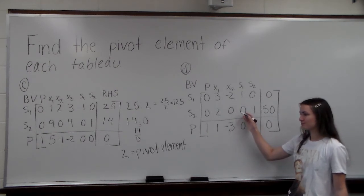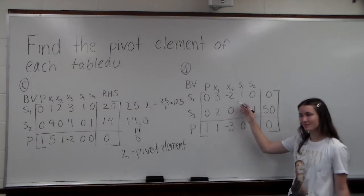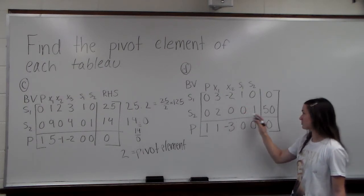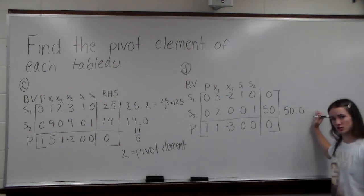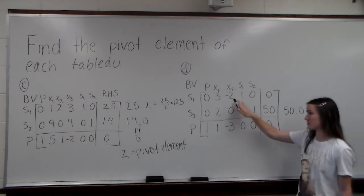And we go up the column here, and as you can see, we have our negative 2 here. Then we also have 0, which would give us, as we did before, 50 to 0, which is an undefined value.